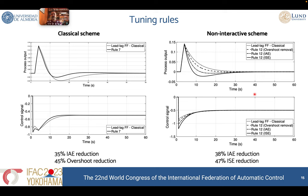In the following results, you can see the effect of applying these ideas to the previous example. You can observe that in the classical control scheme, the improvement is quite high, with a very important reduction in the overshoot and in the integral absolute error. The same happens using the non-interactive control scheme, with important reductions in the different metrics that we tried to minimize.